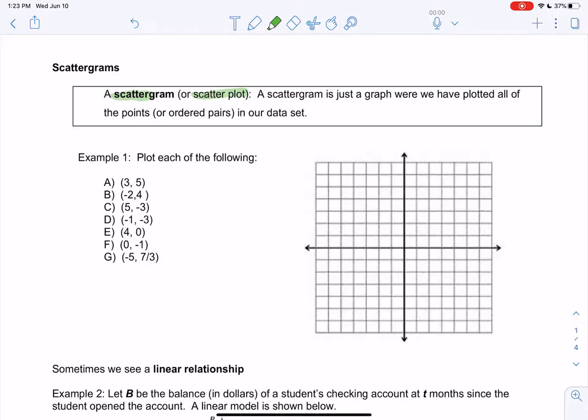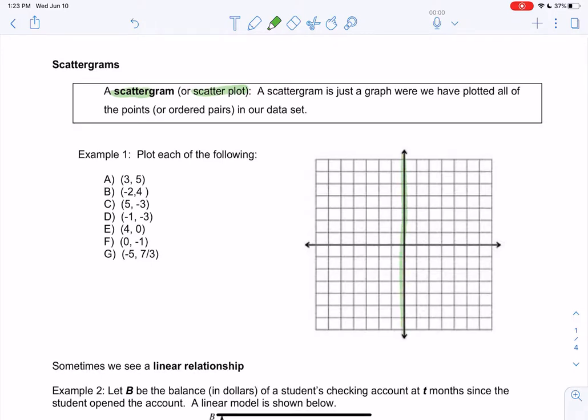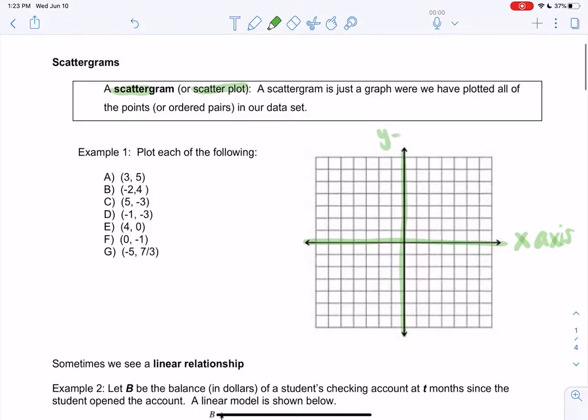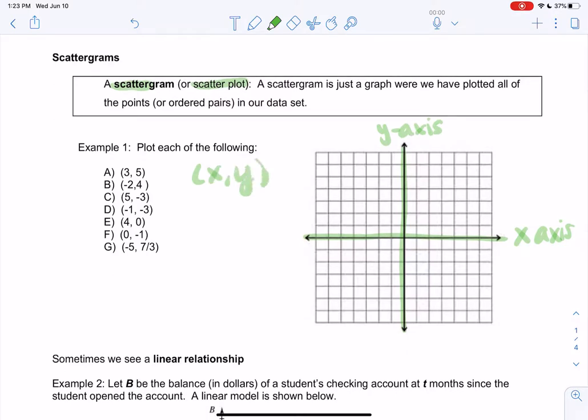So we usually make a graph with the x and y-axis. This is the x-axis, which goes horizontal or flat, and then the y-axis goes up and down. Our points are called x comma y. So x tells us left or right, y tells us up or down.